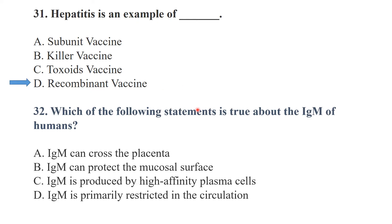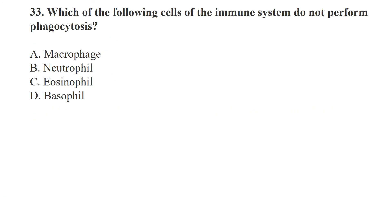Regarding IgM in humans, the best answer is that IgM is primarily restricted to circulation. Among the immune system cells, basophils do not perform phagocytosis.